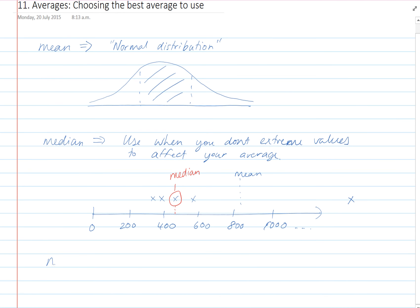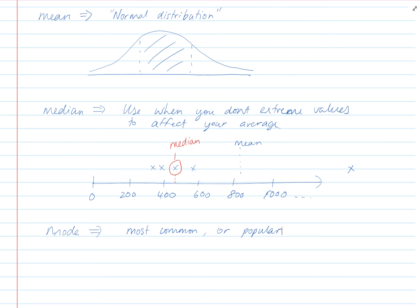When we're using the mode, we want to use it when we're interested in the most common or the most popular. For example, if you're working in sales, you want to be able to sell the item that is going to be the most popular.